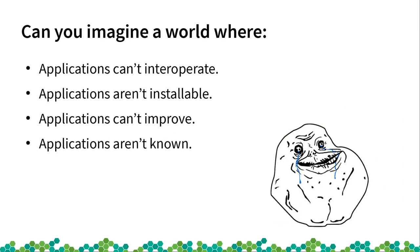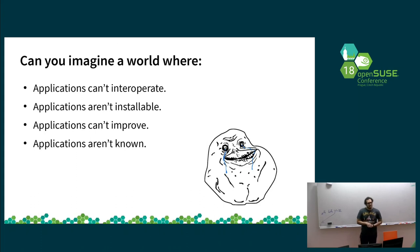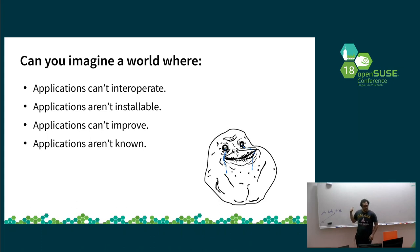Imagine a world where your applications cannot interoperate — where we cannot have Google make a call to a hairdresser and give the feedback back to the user that started the whole thing. Imagine a world where you cannot install applications. You've heard of serverless — basically you distribute nothing, you code nothing, you install nothing. I don't think that works for end users. End users need to install something. Right now you have Flatpak, for example, which works amazingly. I'm running Gentoo here and I install LibreOffice through Flatpak — easy. Though you still need to install the installer.